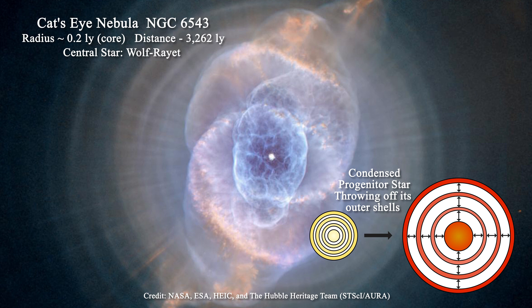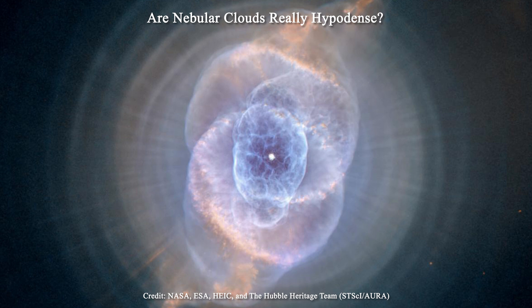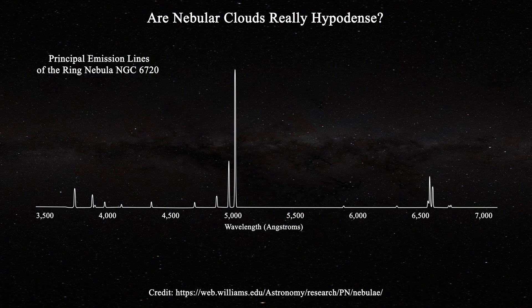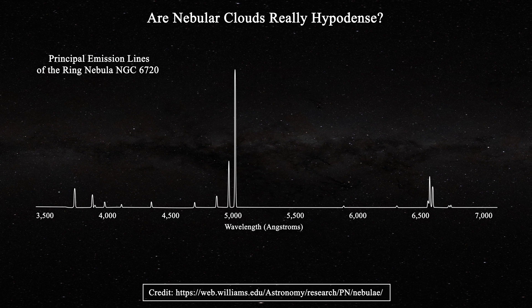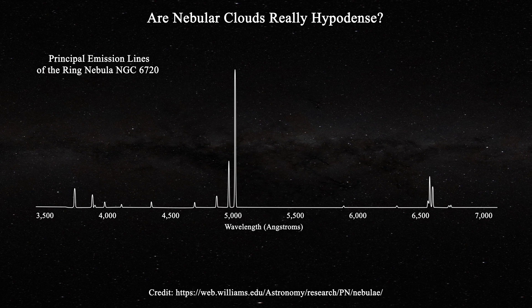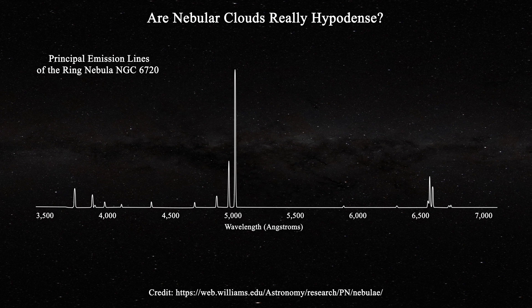Now, what about the concept that the nebular clouds are hypodense? What gave rise to this idea when our telescopes seem to tell us otherwise? Visually, there appears to be significant density in the nebular cloud after all. The notion that planetary nebulae are hypodense actually arises from the analysis of nebular spectral lines. If you are interested in examining nebular spectra on your own, there is a link providing many examples where you can compare spectra to a standard to assist in identifying the lines observed.